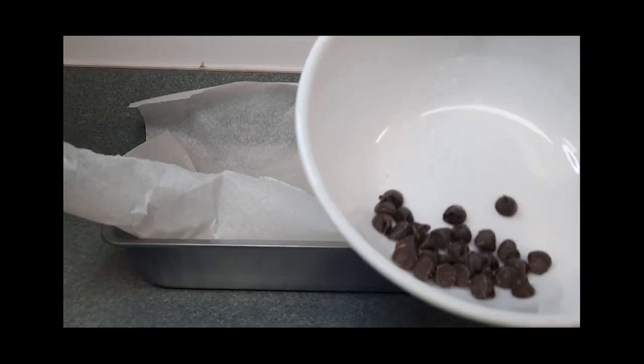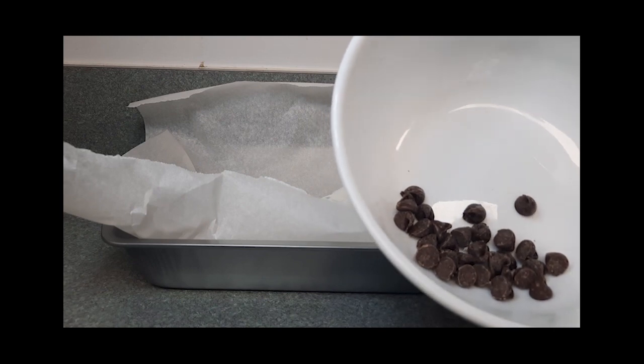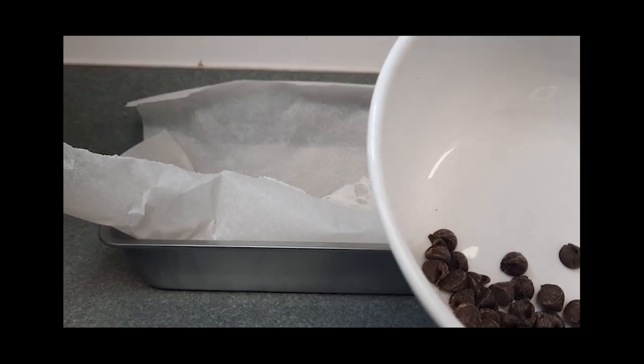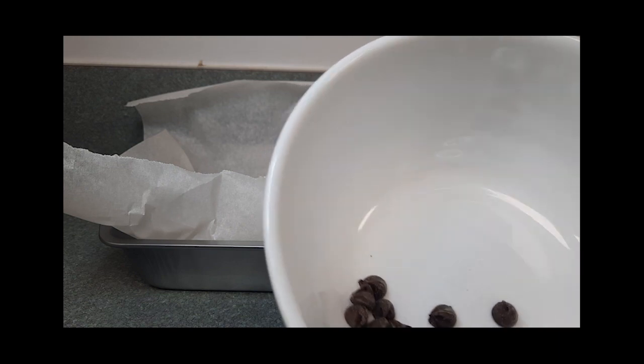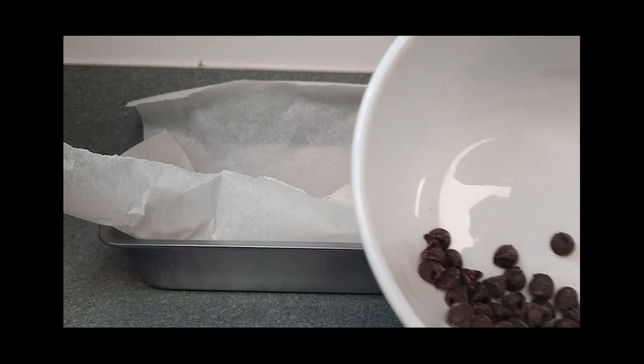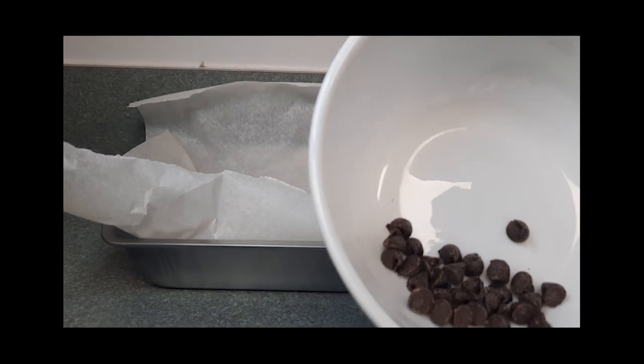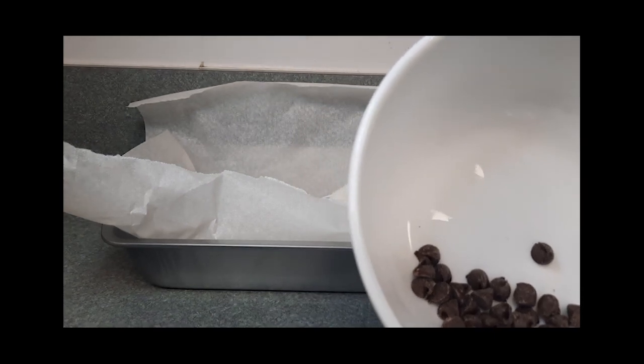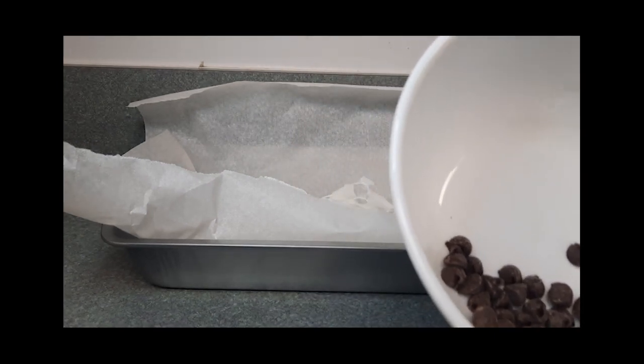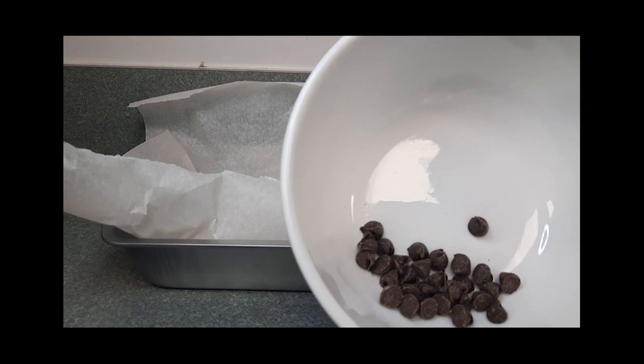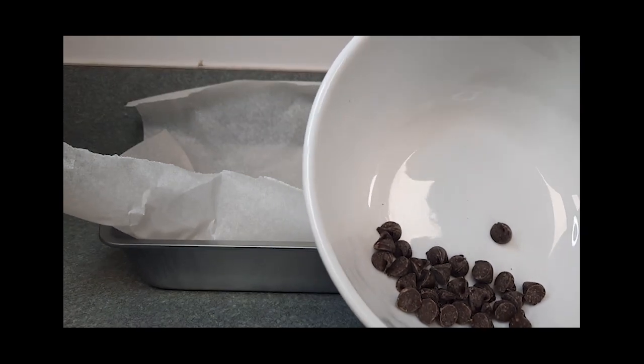Next step is we want to melt our chocolate chips just like you did the candy coating. Start with 45 seconds and then stir it and go from there. If you need to do it a little bit longer, you probably won't, it would be an additional 15 seconds.